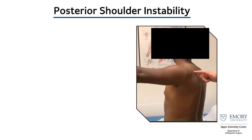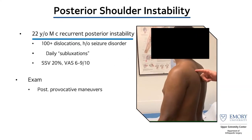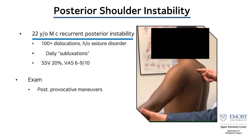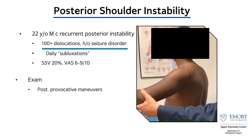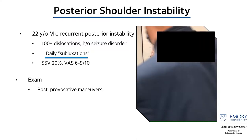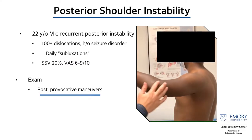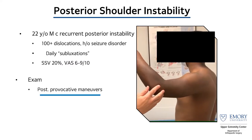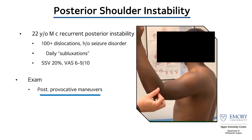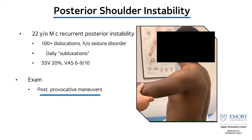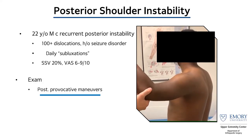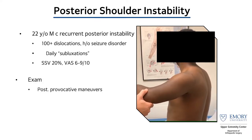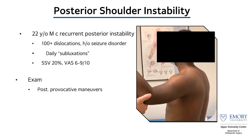Here's a 22-year-old gentleman with recurrent posterior shoulder instability, 100-plus dislocations, history of a seizure disorder, and daily subluxations. You can see how he and I are actively subluxing his shoulder in and out. I'm doing a posterior provocative maneuver and you can see his shoulder subluxing in and out of the joint.